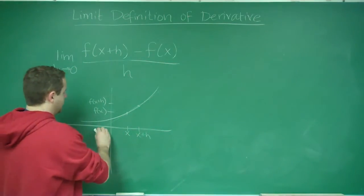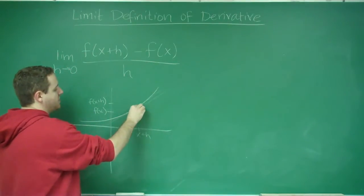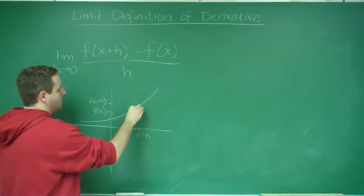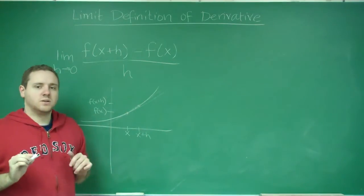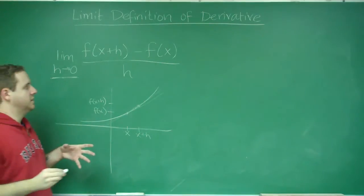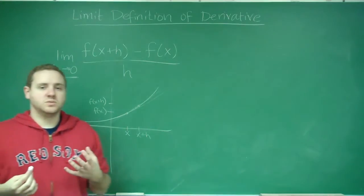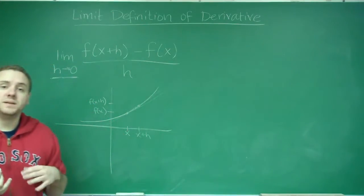But if we want to get the tangent line right here at only one point, we need to move this point closer and closer and closer to the point where they are just a single point, and that's where this limit as h approaches zero comes in. So evaluating this for a given function will get you the derivative, and that's using the limit definition.